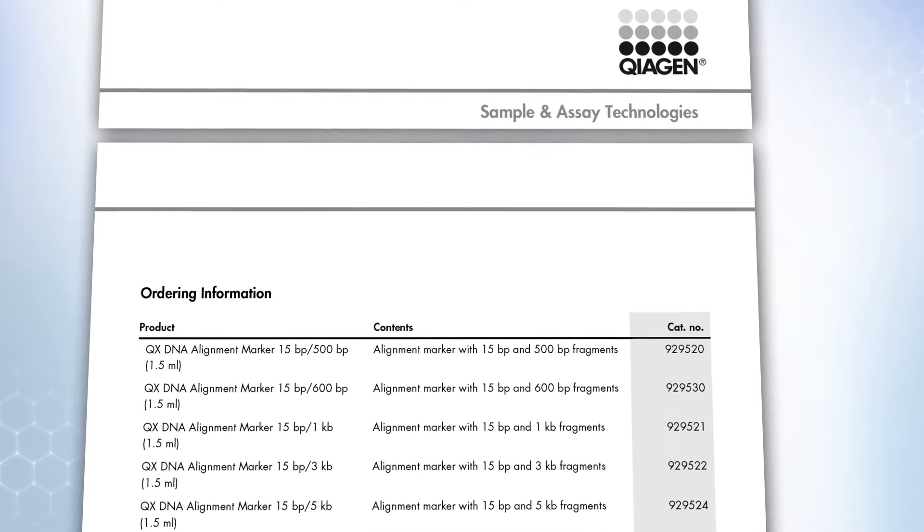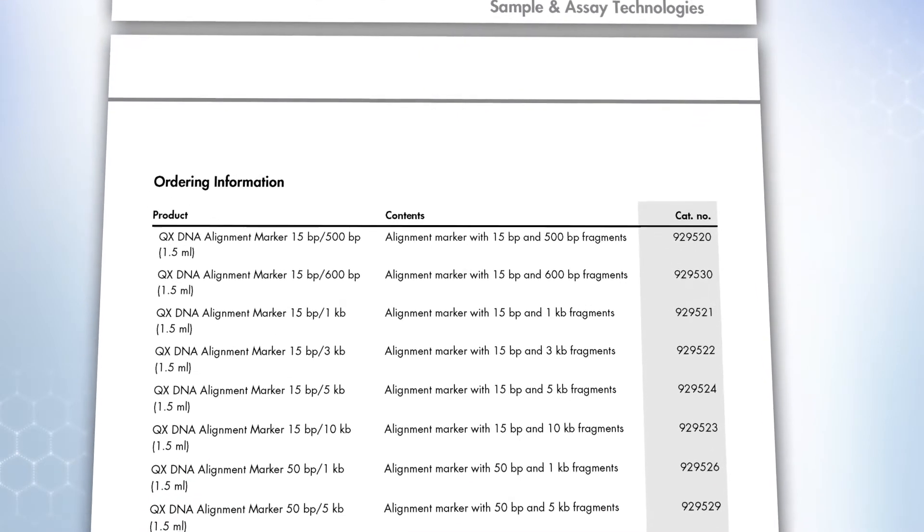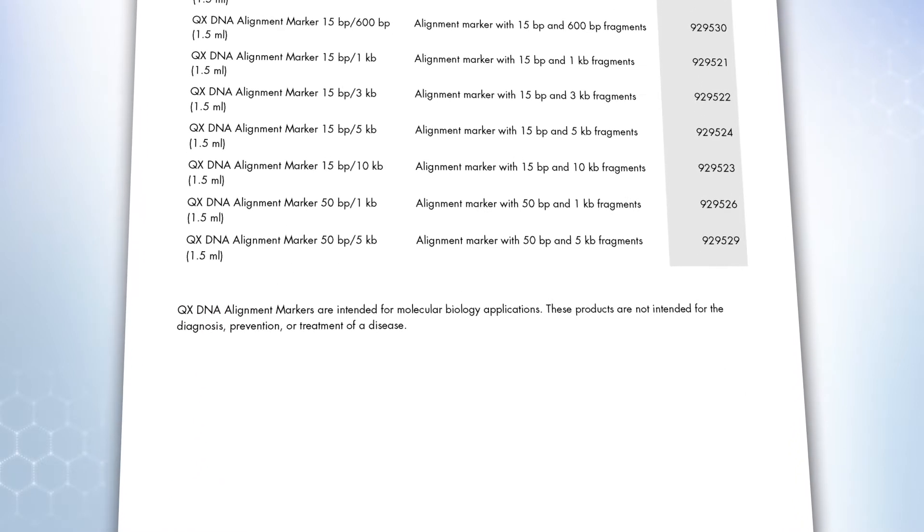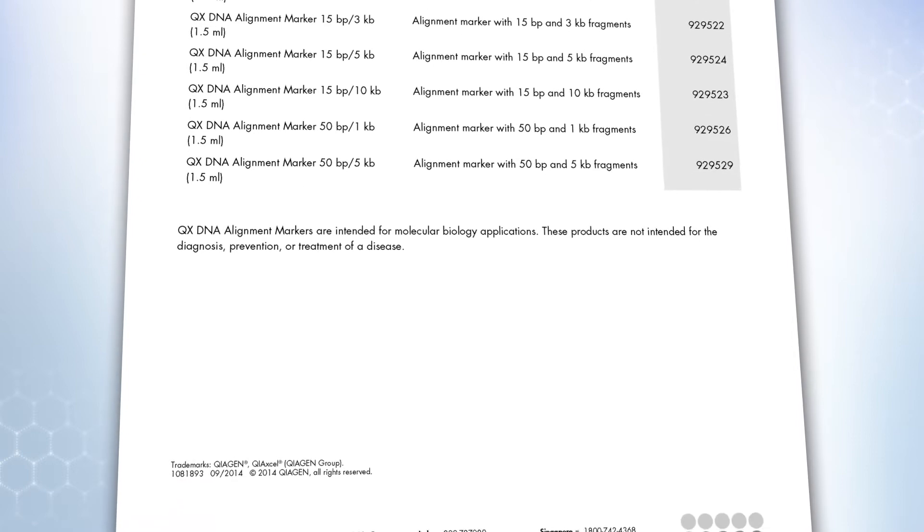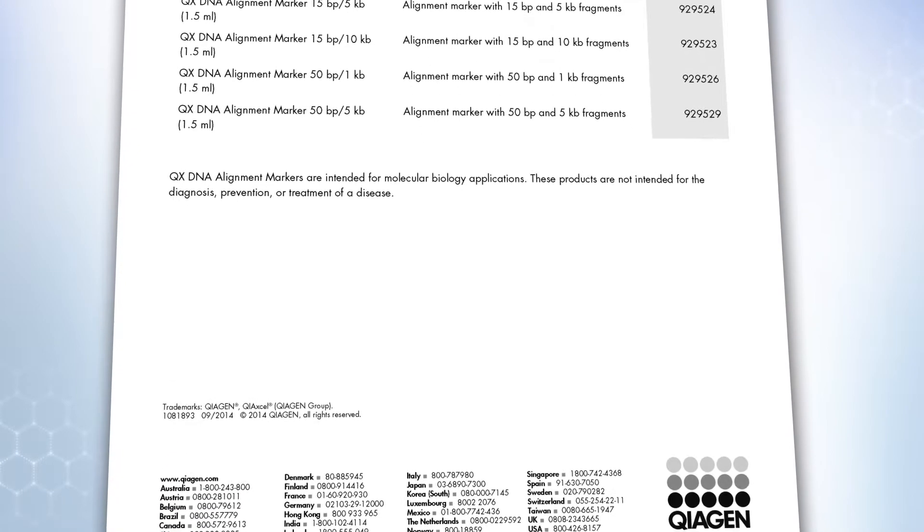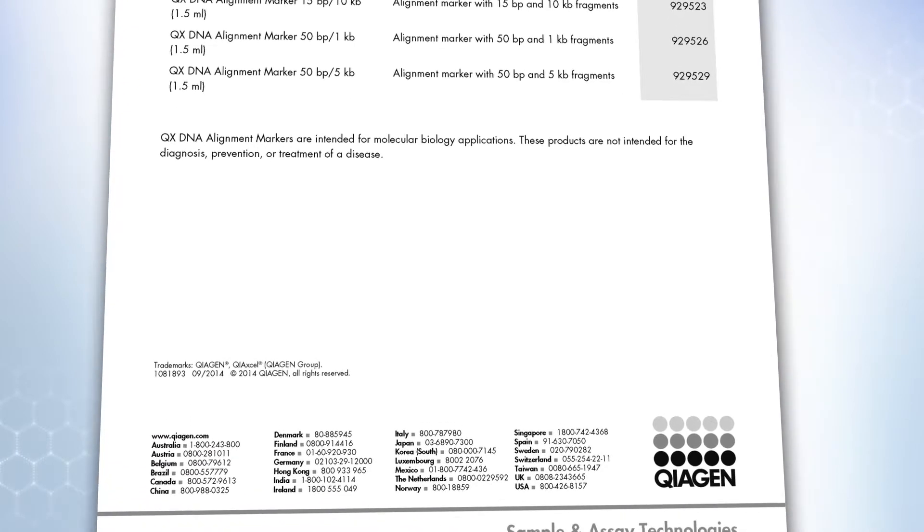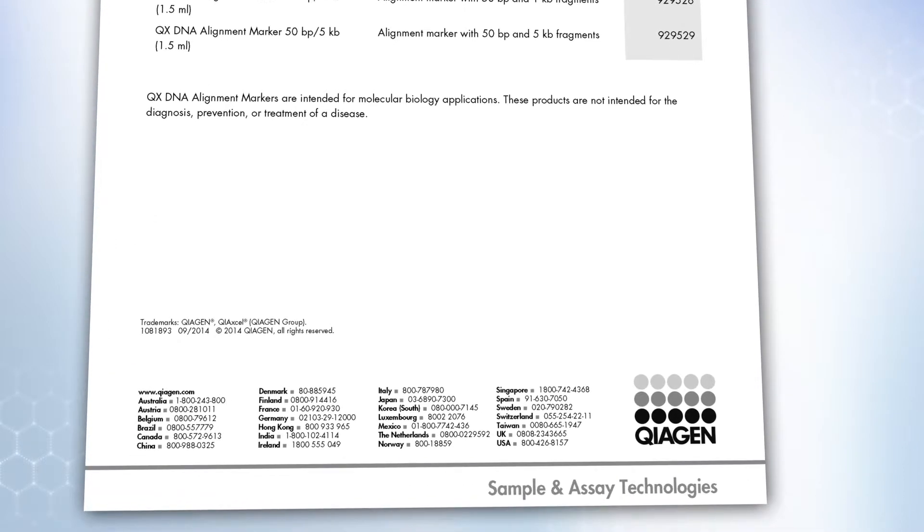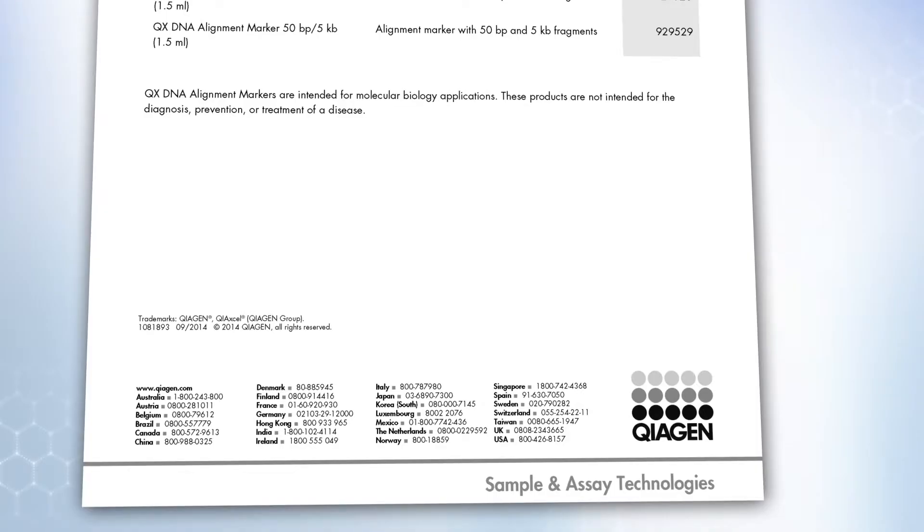For DNA applications, the alignment marker contains an upper and lower fragment of known size. For RNA applications, the RNA alignment marker that is included in the kit contains a single 15 base fragment. During the analysis, all fragments in different channels are aligned with each other based on the fragments of the alignment marker.